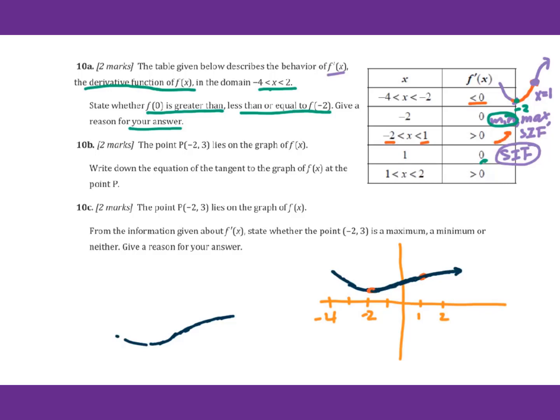Now let's go back to 10a. See whether f of 0 is greater than, less than, or equal to f of negative 2. Definitely it is greater than. The reason: because negative 2 is a minimum point.